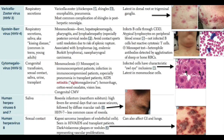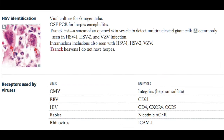Remember that herpes viruses can remain latent in the ganglia or in cells. HSV1 is found in the trigeminal ganglia, HSV2 in the sacral ganglia, VZV in the trigeminal and dorsal root ganglia, EBV latently in B cells, and CMV in mononuclear cells.